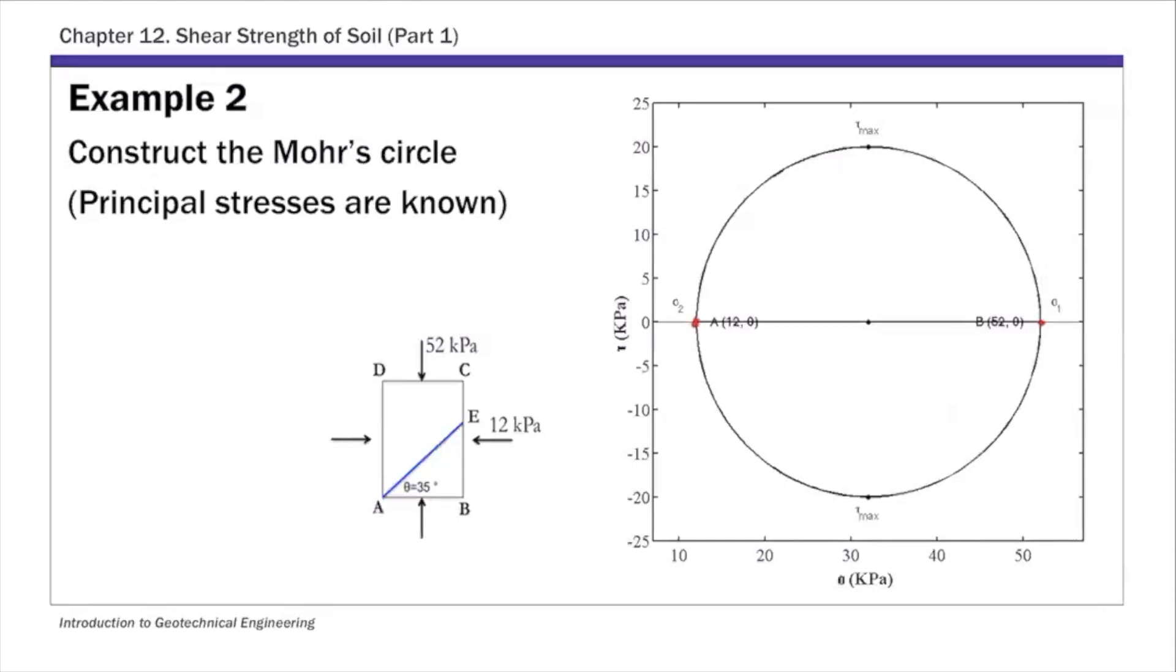These are two points on the Mohr circle, the major and minor principal stresses. We know sigma 1 is 52, that's the larger of the two, and sigma 3 is 12. The principal stresses are provided, and we can construct the Mohr circle with sigma 1 and sigma 3.